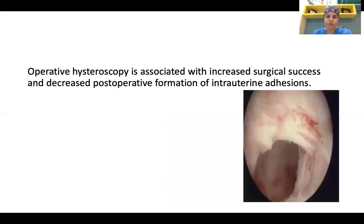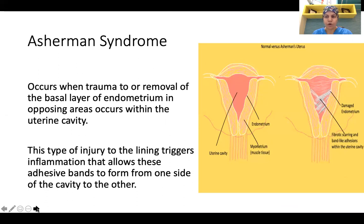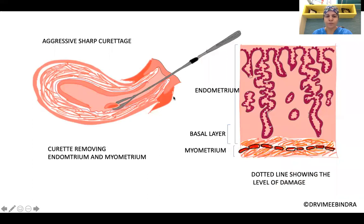Various studies have shown operative hysteroscopy is associated with increased surgical success and decreased post-operative formation of intrauterine adhesions. Understanding the pathophysiology justifies propagating hysteroscopy for RPOC. Asherman's syndrome occurs when trauma to or removal of the basal layer of endometrium in opposing areas occurs within the uterine cavity. This injury triggers inflammation, allowing adhesive bands to form from one side of the cavity to the other. When curettage removes the endometrium and part of the myometrium, this raw area leads to adhesive band formation between the anterior and posterior uterine walls, increasing the risk of intrauterine adhesions.